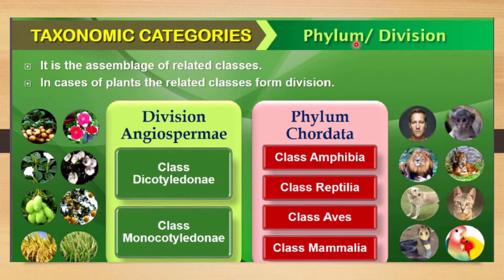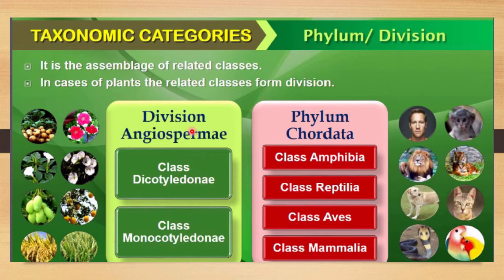The next category is phylum or division. When talking about animals, use the word phylum; when talking about plants, use the word division. For plants, the division is Angiospermae. For animals, one example is the phylum Chordata. These will be discussed in more detail in chapter three.